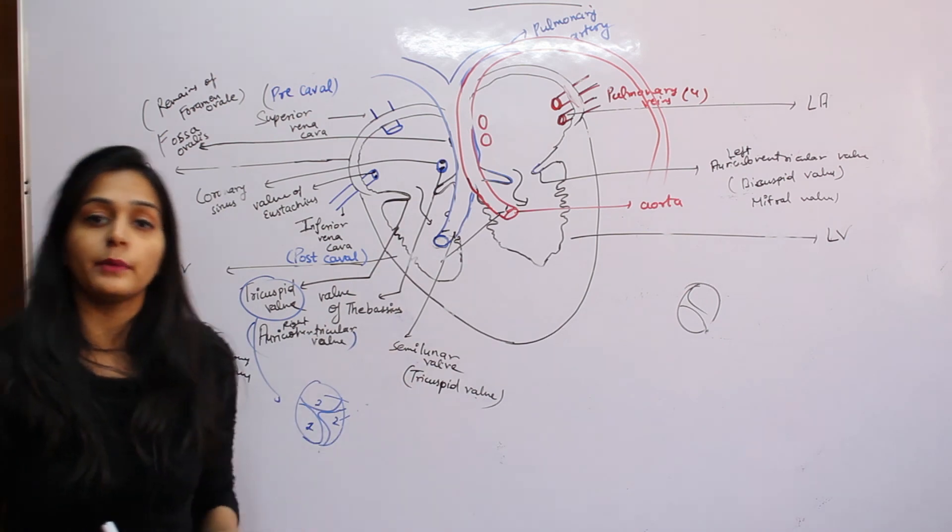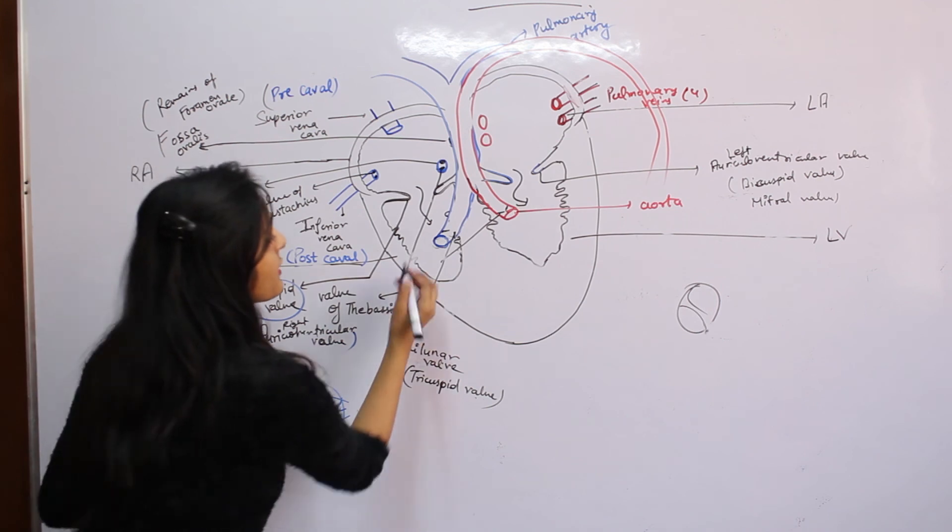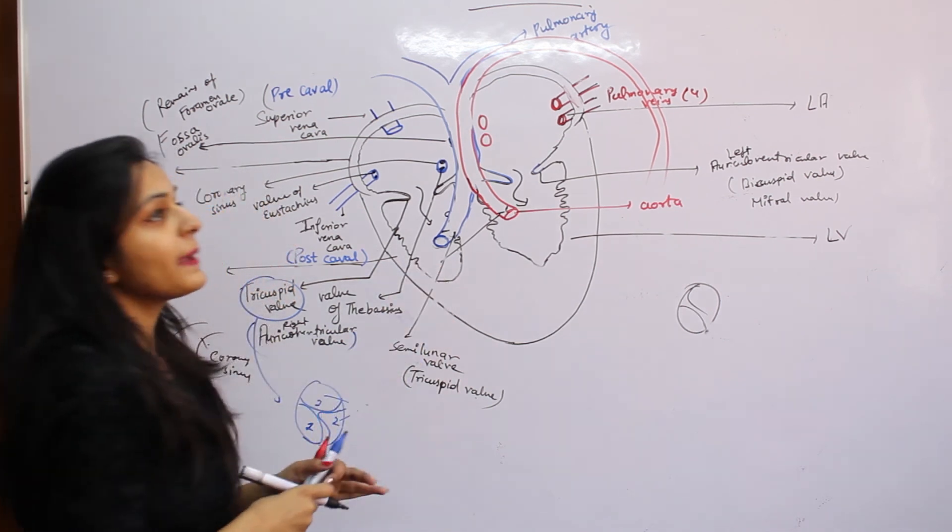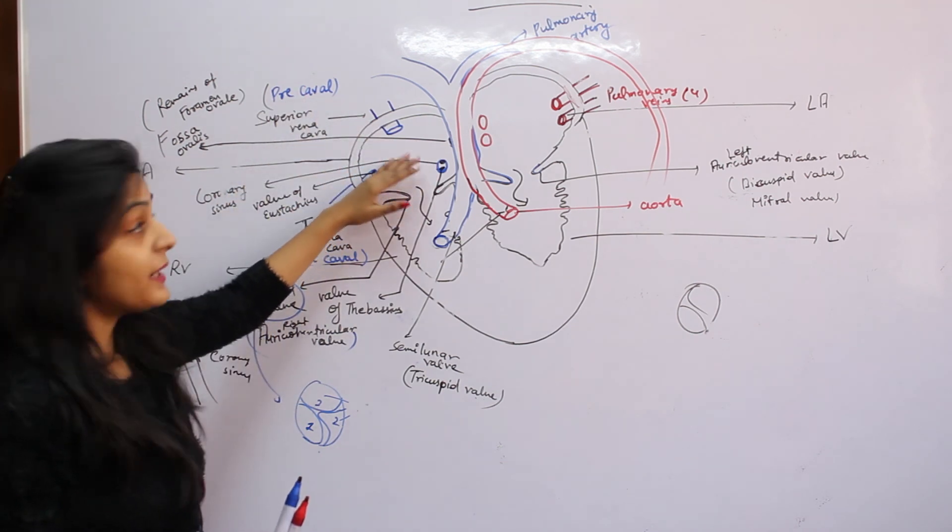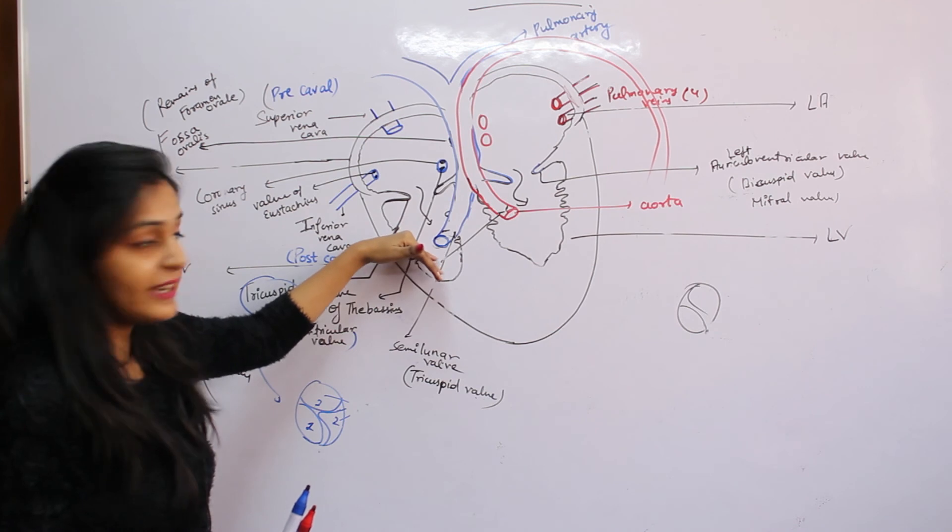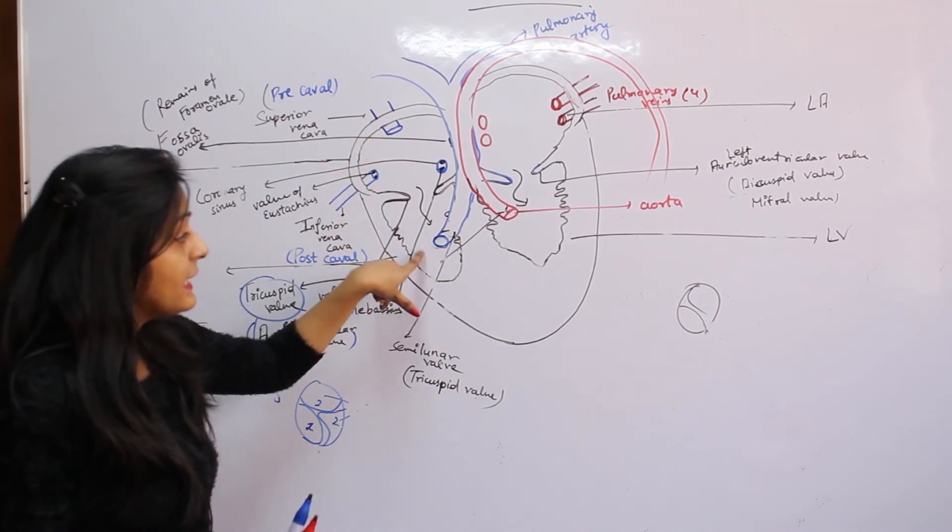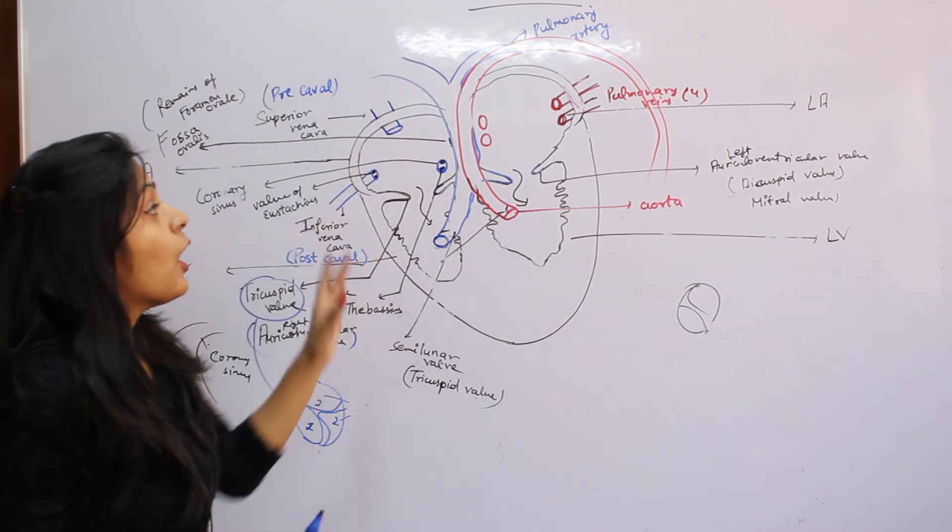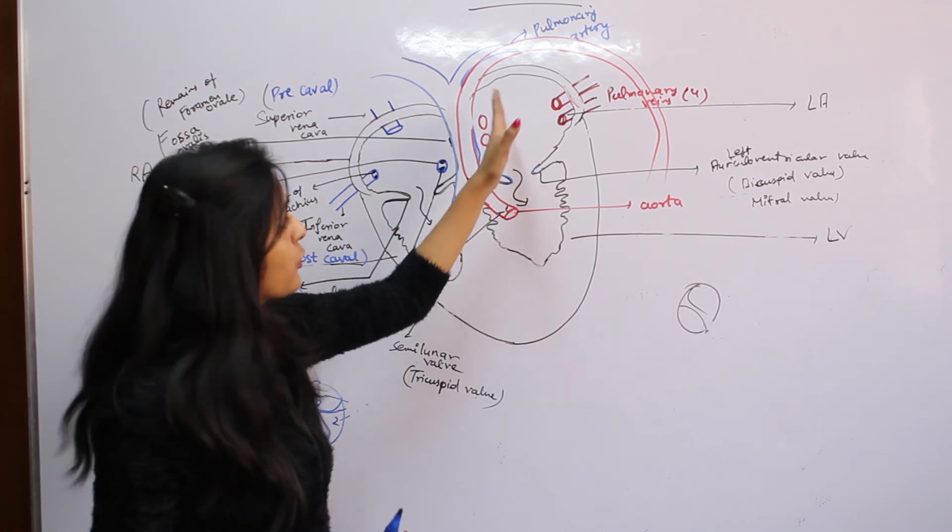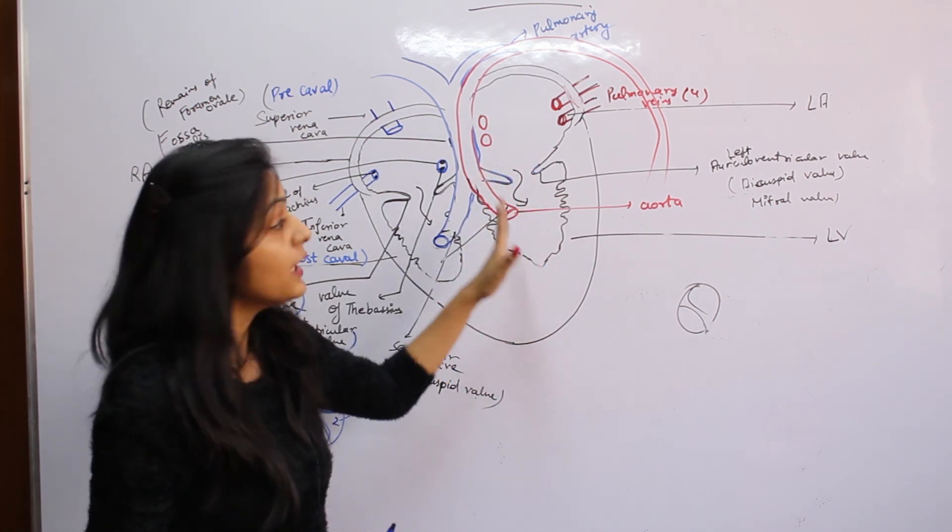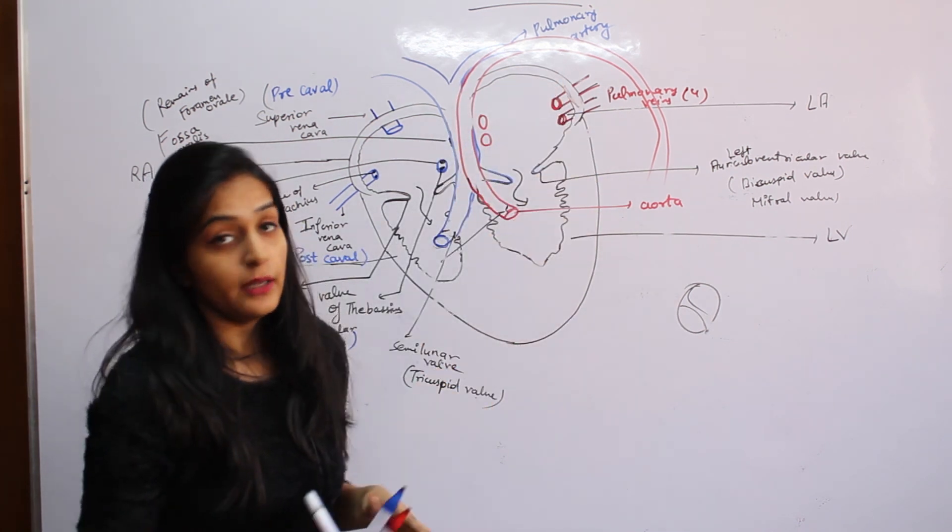Here we have studied all the chambers. An overview: deoxygenated blood enters the right atricle, then the right ventricle contracts, sending deoxygenated blood via pulmonary artery to both lungs. Oxygenated blood returns to the left atricle, goes to the left ventricle, and this oxygenated blood via the aorta goes to our body organs.